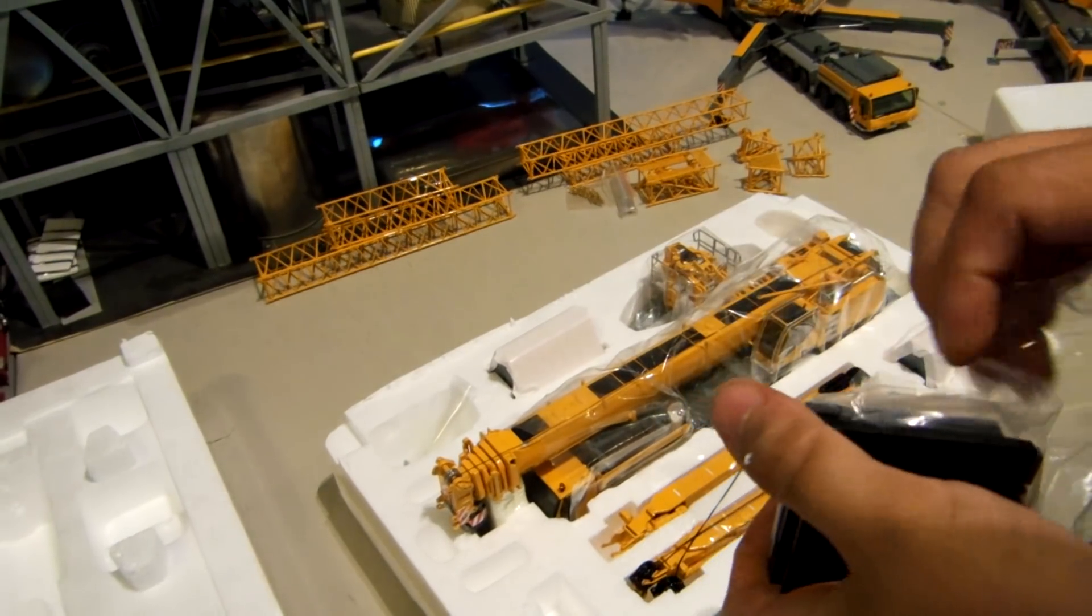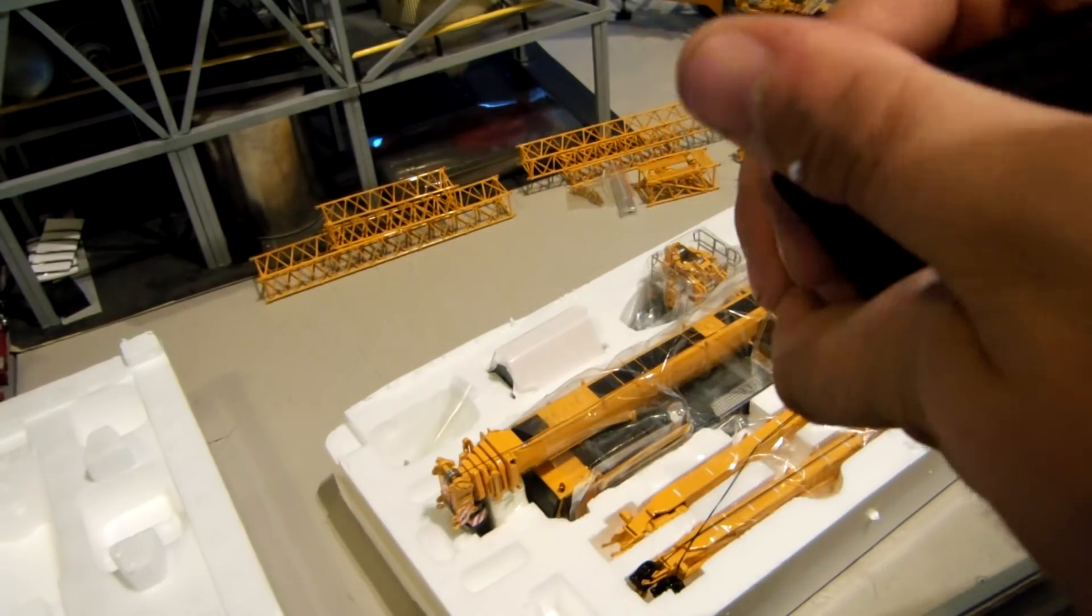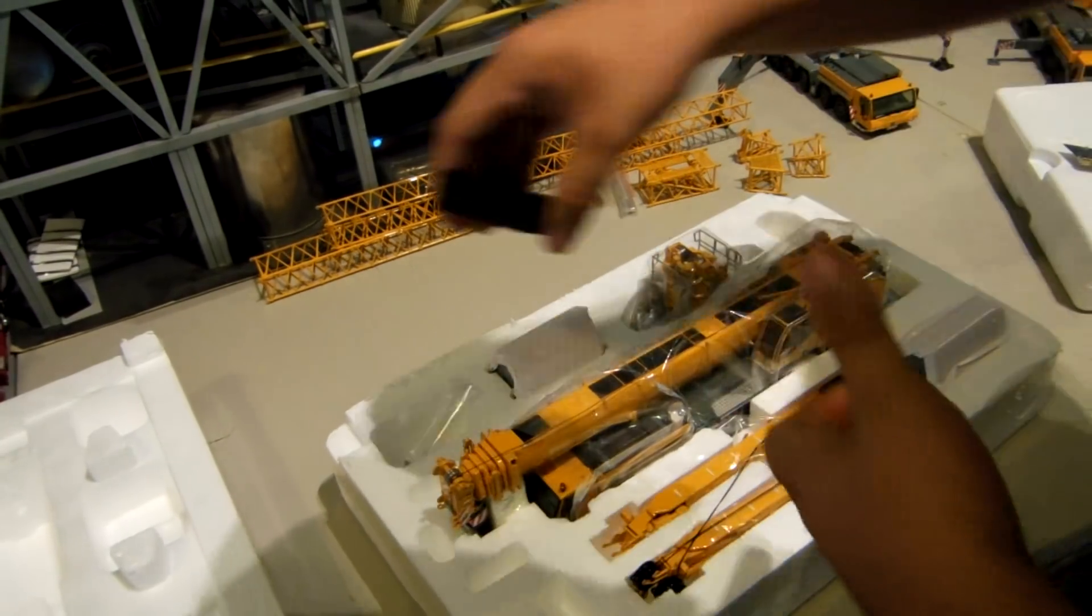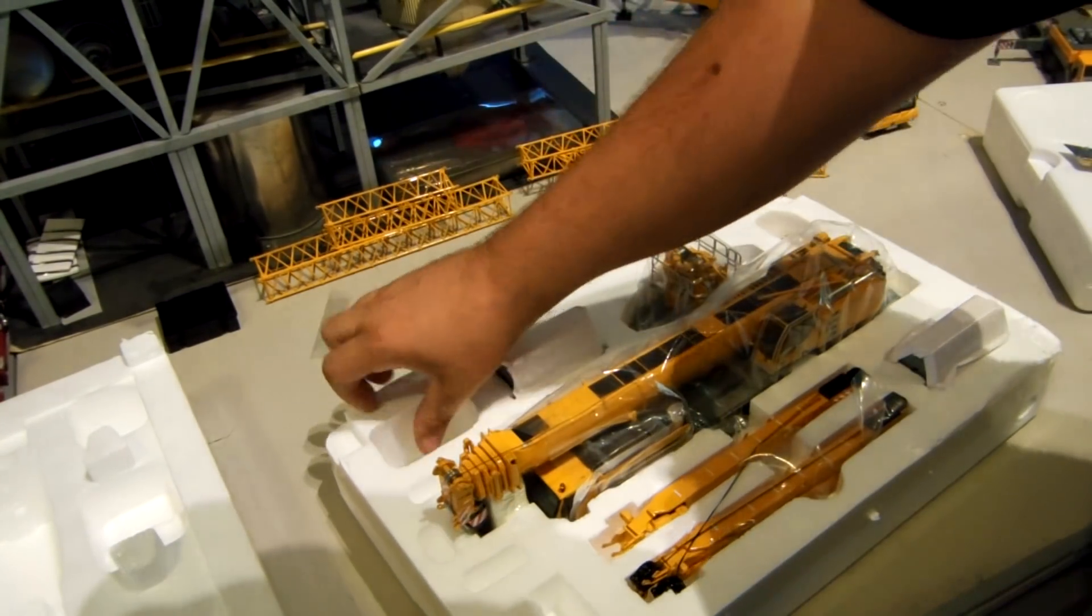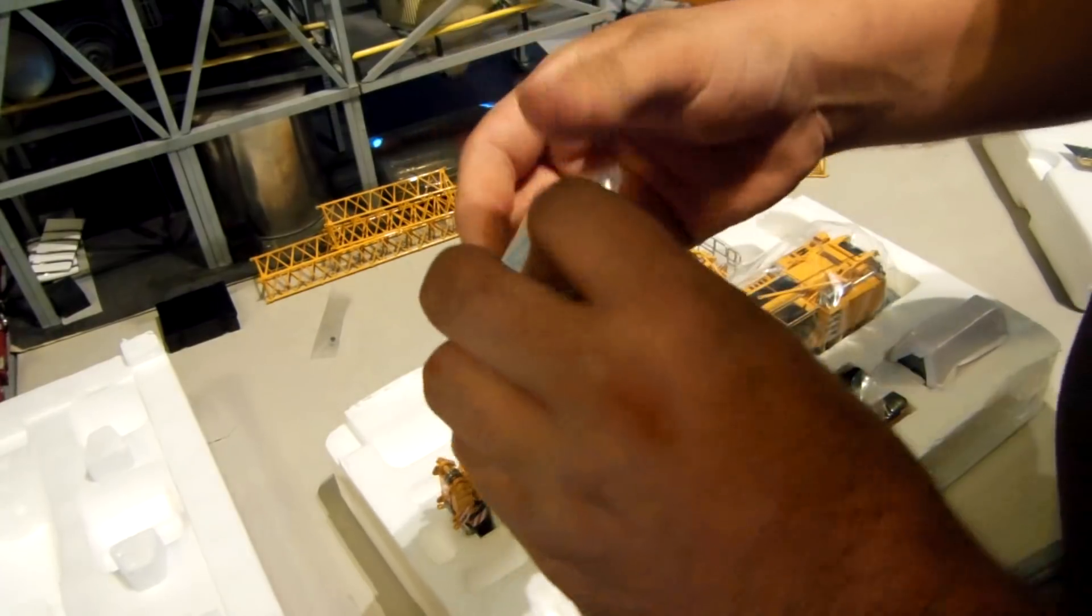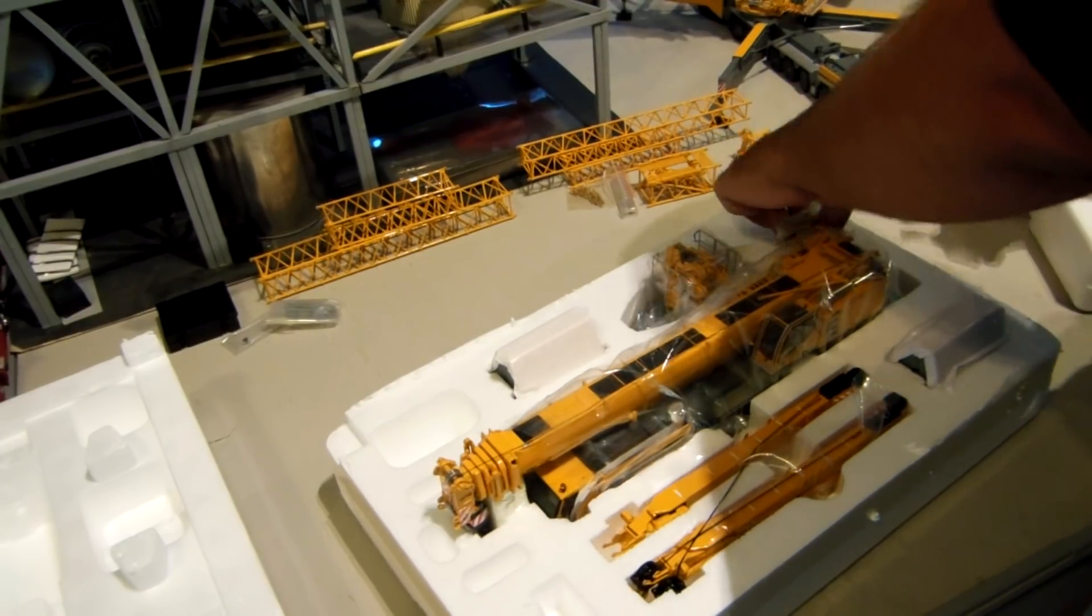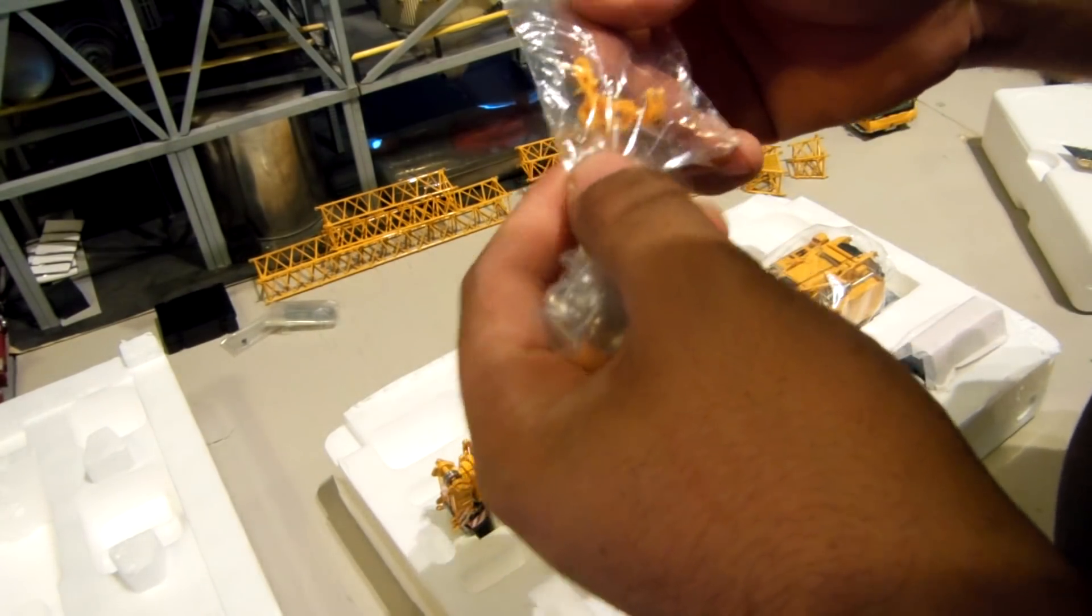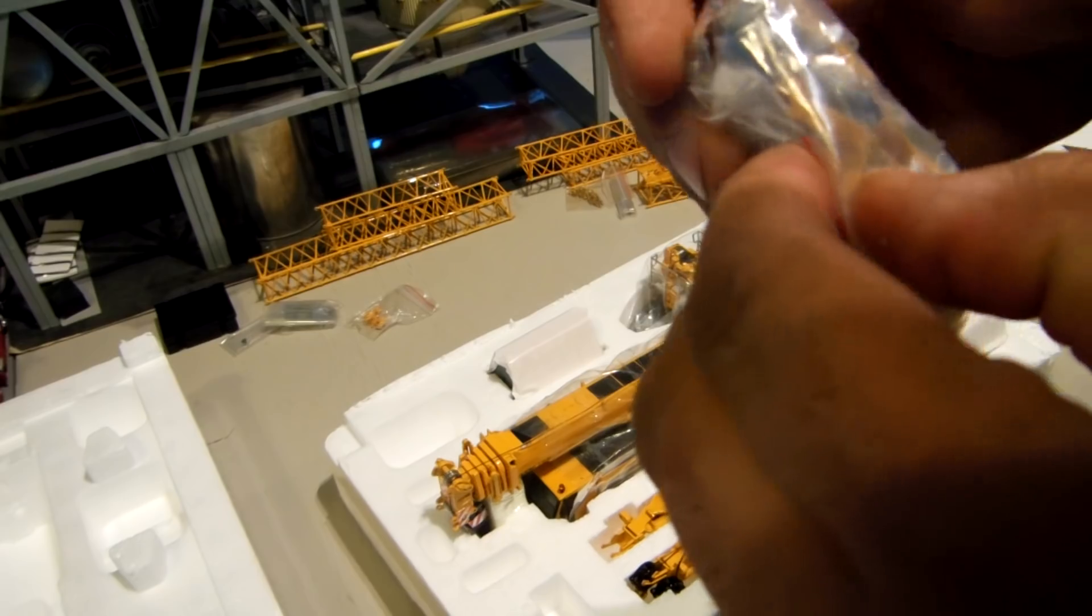Right here are your outrigger base plates. They're all metal, they've got lifting lugs on them. Pretty nice, I'm glad they come with it. I guess there's a tie-off point or something. Handrails, a bunch of parts.